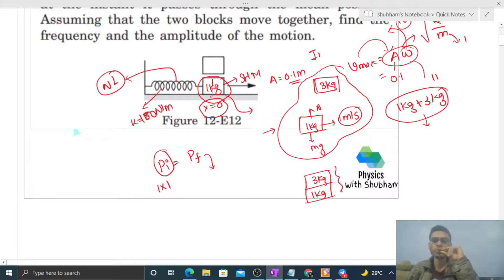Both of them are moving together with a common velocity, let's say v. So final linear momentum will be 4 times v. It becomes a single block whose mass is 4 kilogram and it is moving with some speed v.